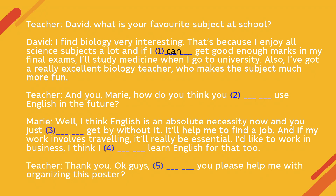In gap number 2, we can use either 'may' or 'can' as we talk about possibility. Gap 3 needs the negative form of 'can', which is 'can't', because we need to show absence of ability in this sentence. In the fourth gap, there is the modal verb 'should' — we use it when we think that something is a good idea or when we give advice. And finally, the last gap is filled with 'could', as it is a polite request.